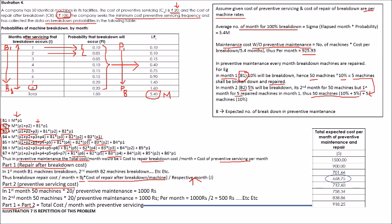Part two is the preventive servicing cost per month. We always have 50 machines at 20 rupees per machine, divided by the month number. Month one: 50 × 20 ÷ 1 = 1000. Month two: 50 × 20 ÷ 2 = 500. Extrapolate this for all eight months. The total expected cost per month of preventive maintenance is part one plus part two.